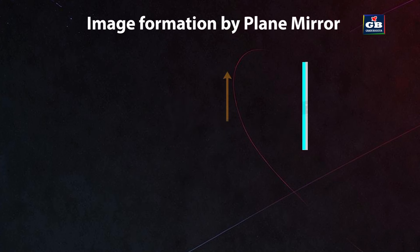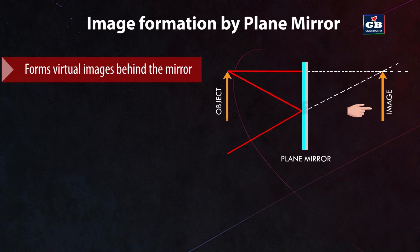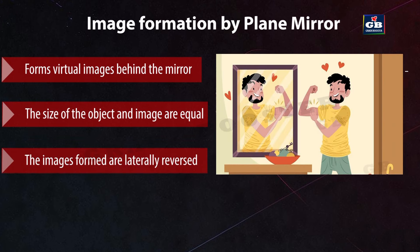Image formation by plane mirrors: plane mirrors create virtual images that appear to be located behind the mirror at the same distance as the object in front. These virtual images are not real — they cannot be projected onto a screen. The size of the image in a plane mirror is the same as the object, with no magnification. The images formed by plane mirrors are laterally reversed — if you raise your right hand, your image appears to raise its left hand.